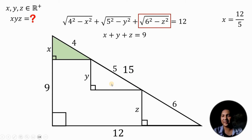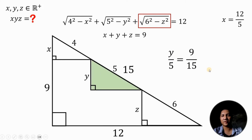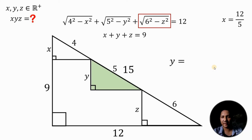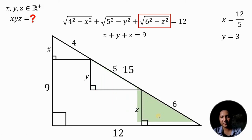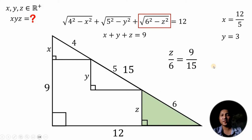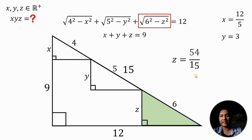For y, using the right triangle with hypotenuse 5: y over 5 equals 9 over 15. Multiplying both sides by 5 gives 45 over 15, which equals 3. So y equals 3. For z, using the right triangle with hypotenuse 6: z over 6 equals 9 over 15. Multiplying both sides by 6 gives 54 over 15, which simplifies to 18 over 5. So z equals 18 over 5.